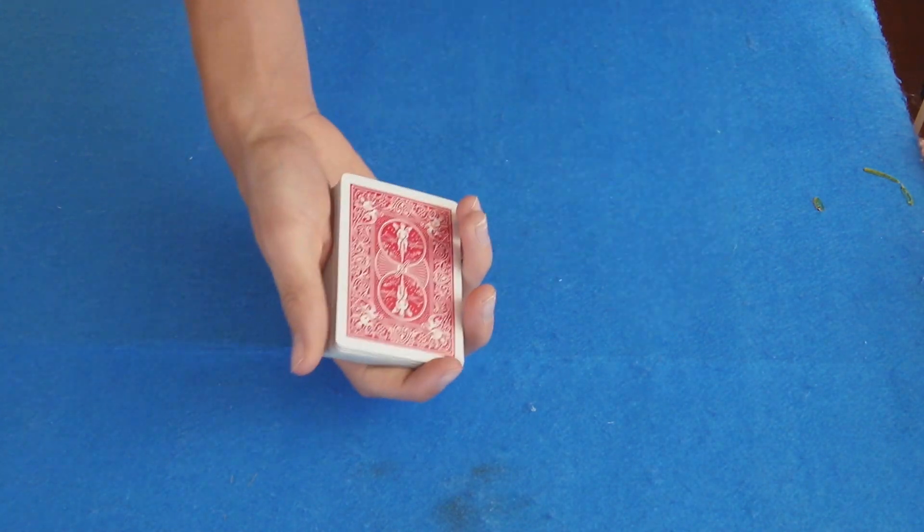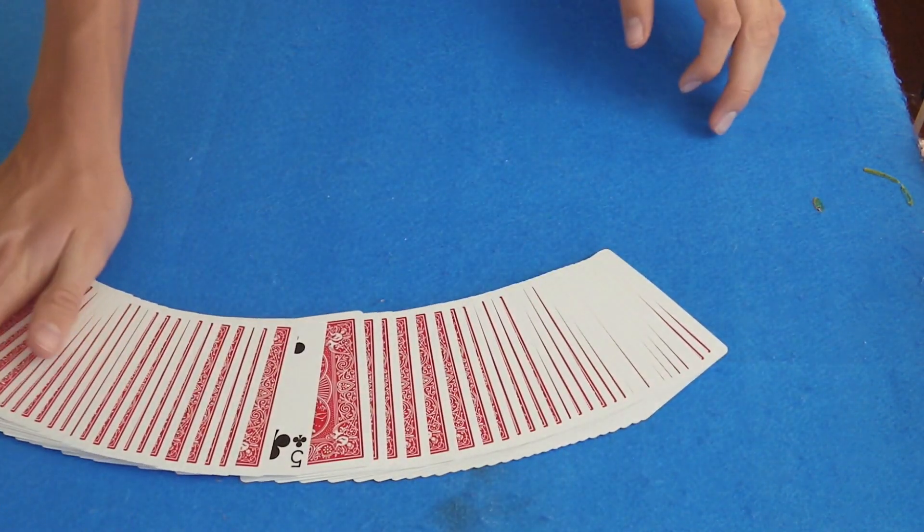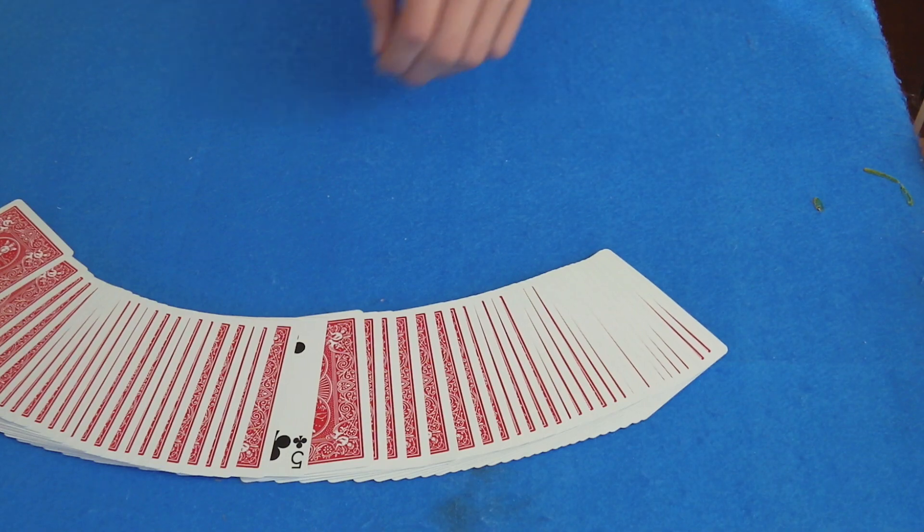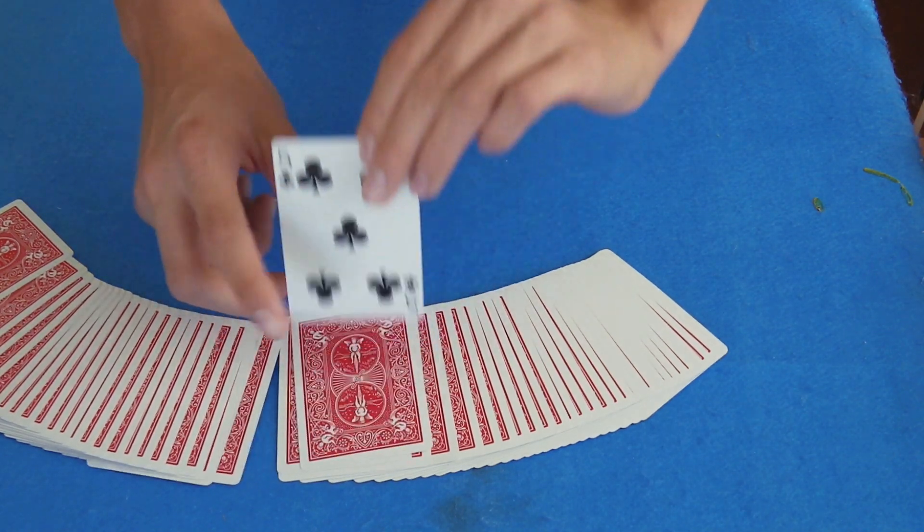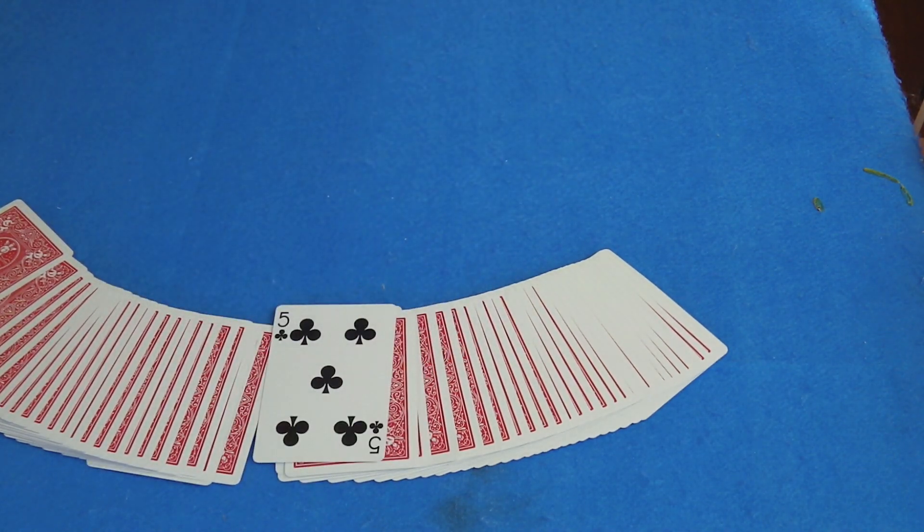But with a snap, all the cards go back to normal except yours, which is the five of clubs. If you guys like this video, don't forget to smash that like button. If we get ten likes, I'll show you guys how to do this trick.